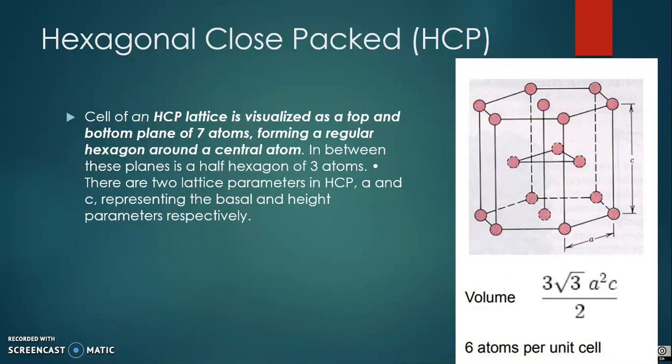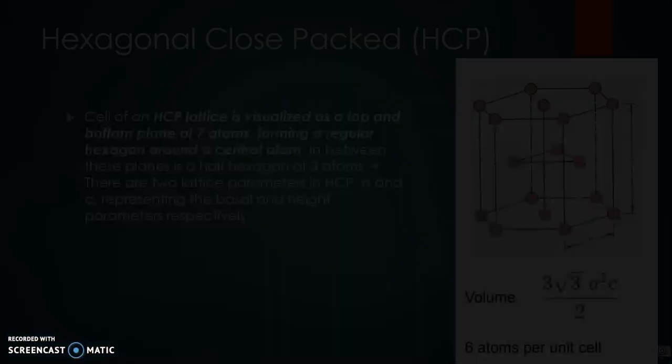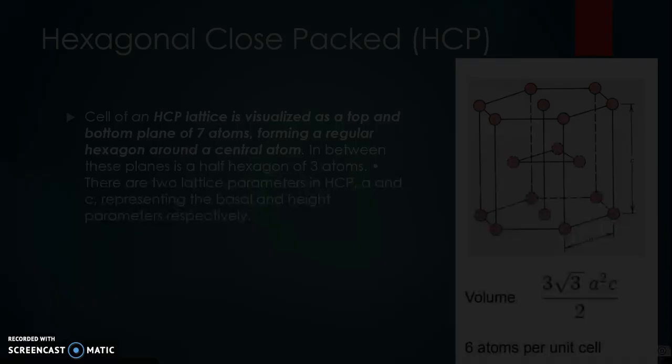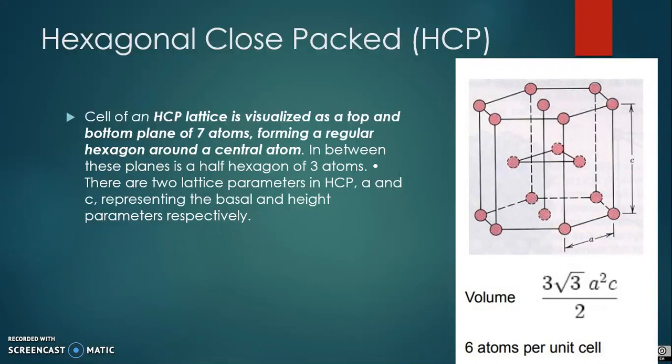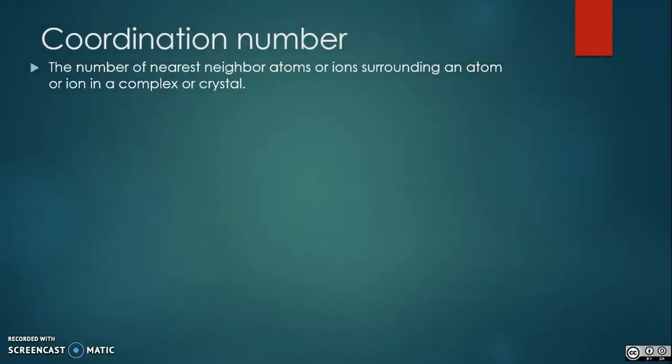There are six atoms in the HCP unit cell. Each of the twelve atoms in the corners of the top and bottom layers contributes one-sixth atom to the unit cell. The two atoms in the center of the hexagon of both top and bottom layers each contribute half an atom, and each of the three atoms in the middle layer contributes one atom. The coordination number of the atoms in this structure is twelve.